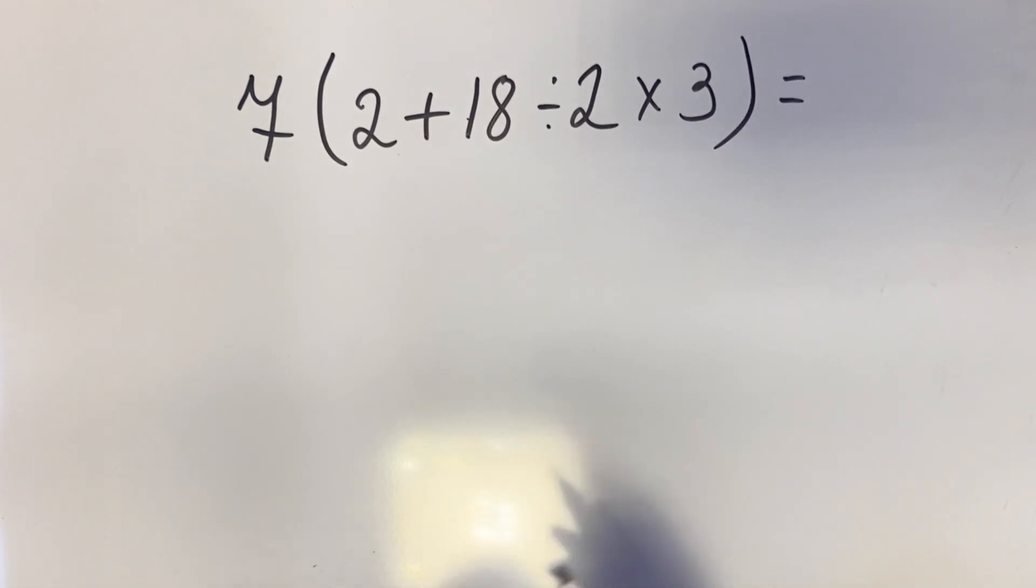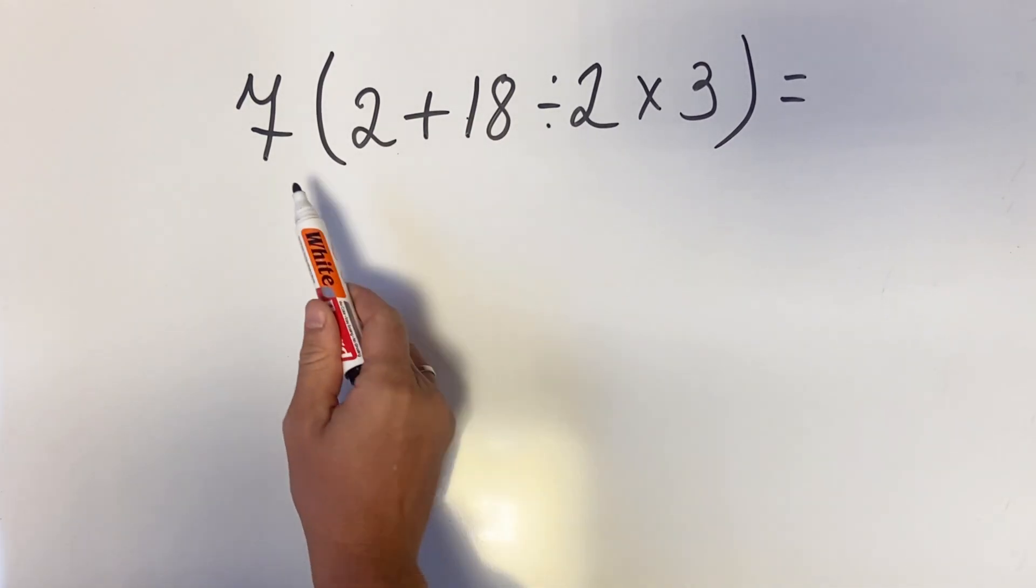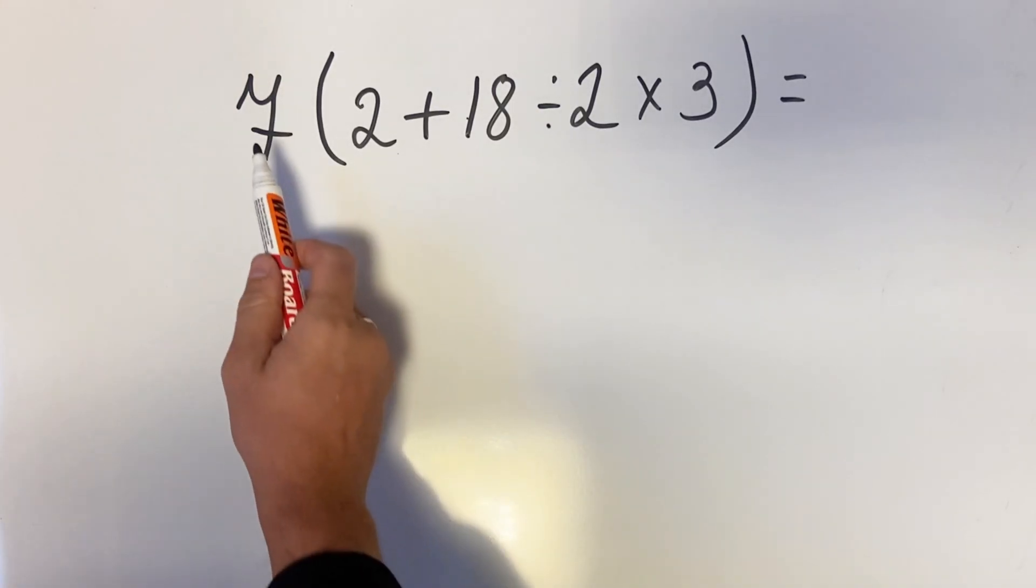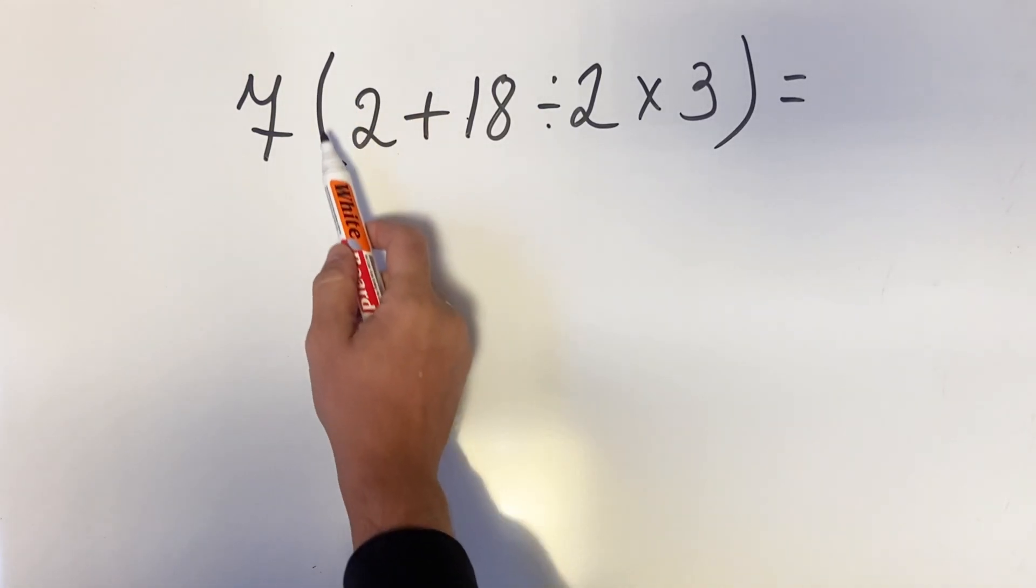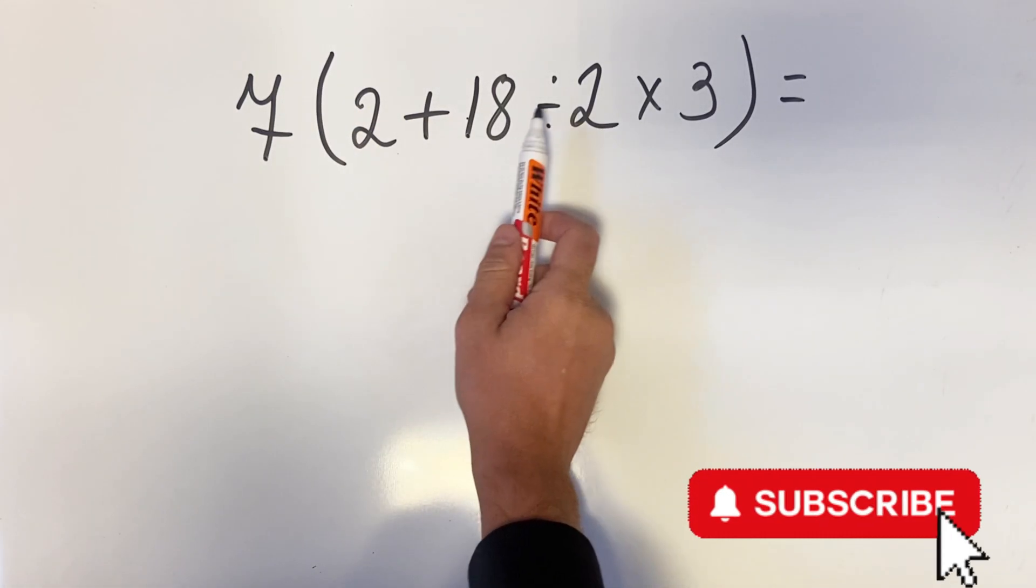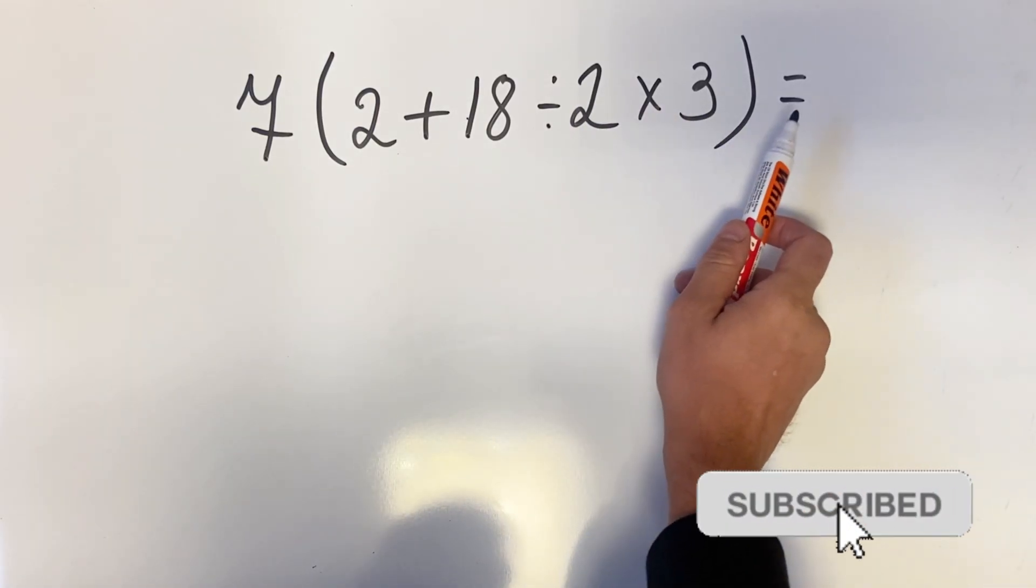Hello everyone and welcome. My name is Victor and today we're going to solve this type of equation. We have 7 multiplied by parenthesis 2 plus 18 divided by 2 multiplied by 3.